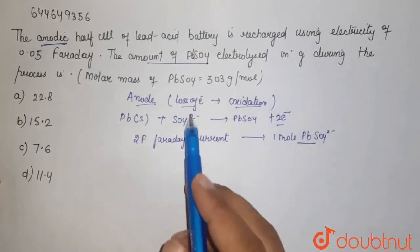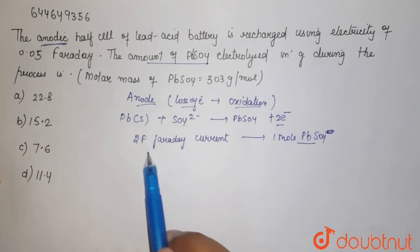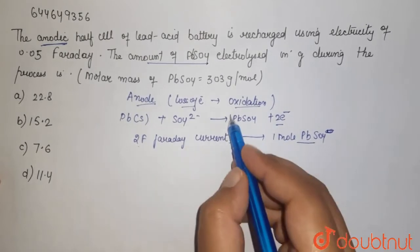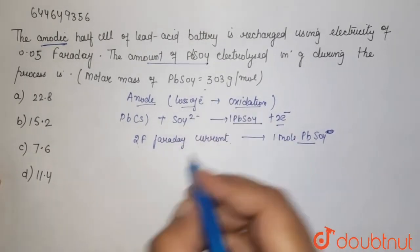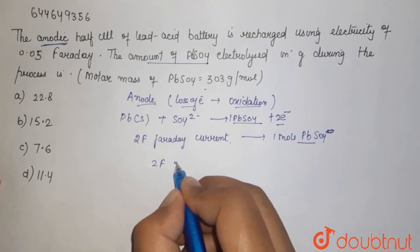So here if you note, SO4 2- with two Faraday current is using one mole of PbSO4. If it is two Faraday of current, it uses one mole of PbSO4.